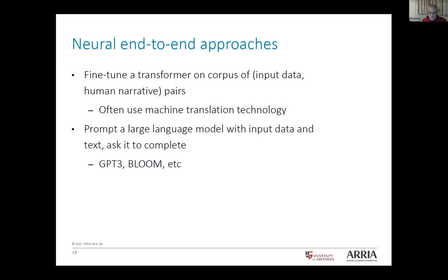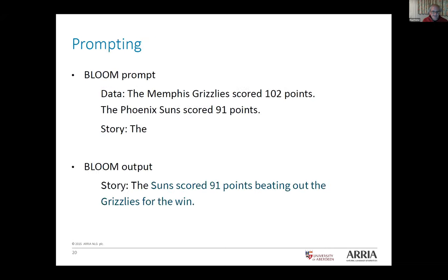The neural end-to-end approach says: let's do it in one jump. We take a transformer and fine-tune it on a corpus of input data paired with human narratives. We often use machine translation technology, treating it as a translation problem — going from data to English rather than French to English. Or more recently, we take a prompting approach with a large language model like GPT-3 or Bloom, prompting it to generate the output.